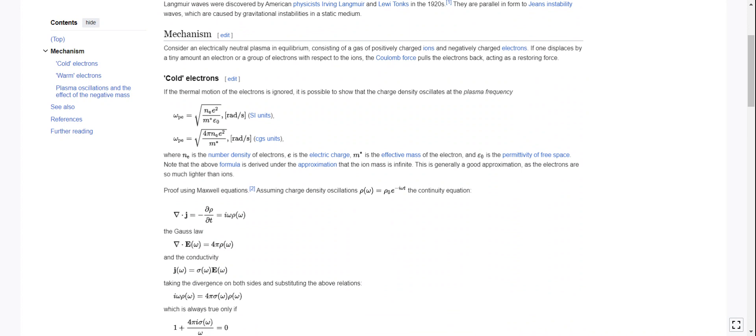If the thermal motion of the electrons is ignored, it is possible to show that the charge density oscillates at the plasma frequency, represented omega sub p e equals the square root of n sub e e squared over m star epsilon naught. And this is in radians per second, as frequencies always are. And then we also have this as equivalent to square root of 4 pi n sub e e squared over m star.